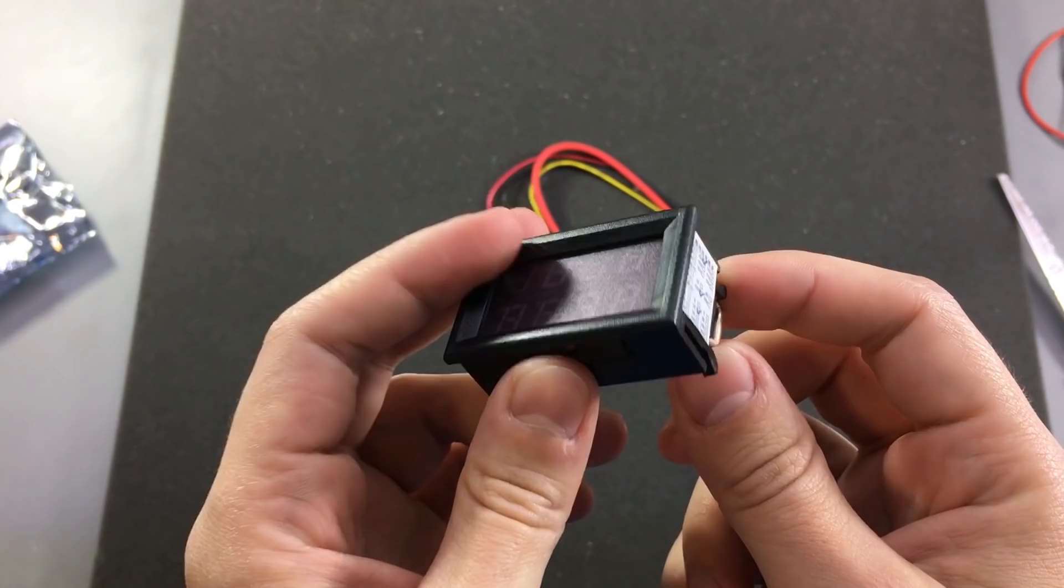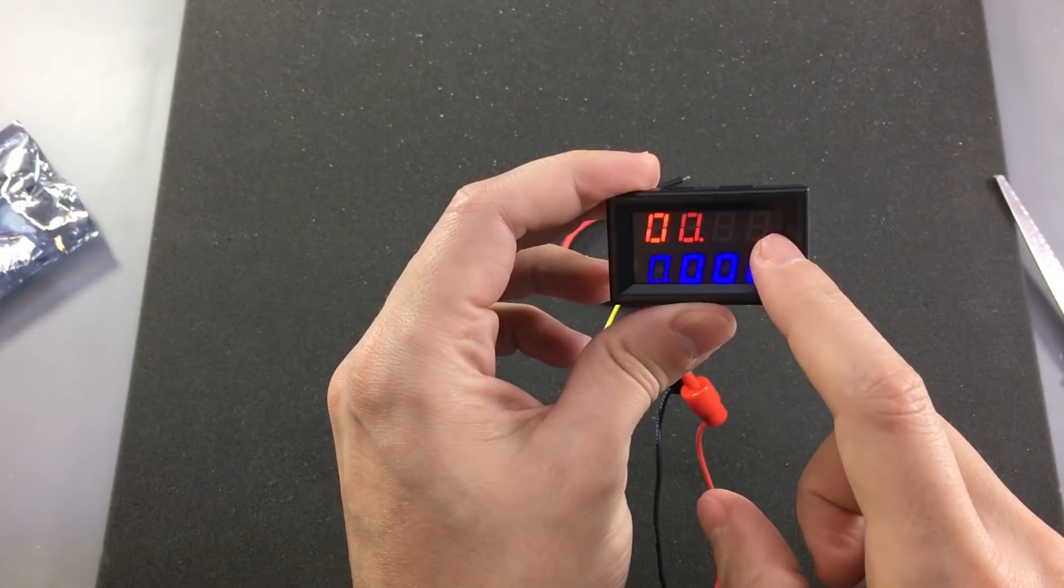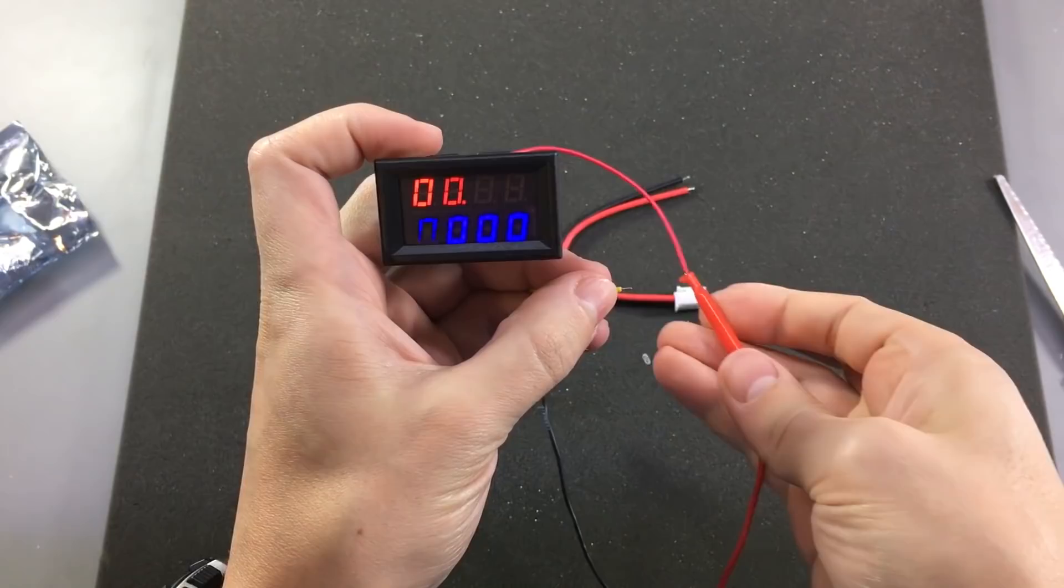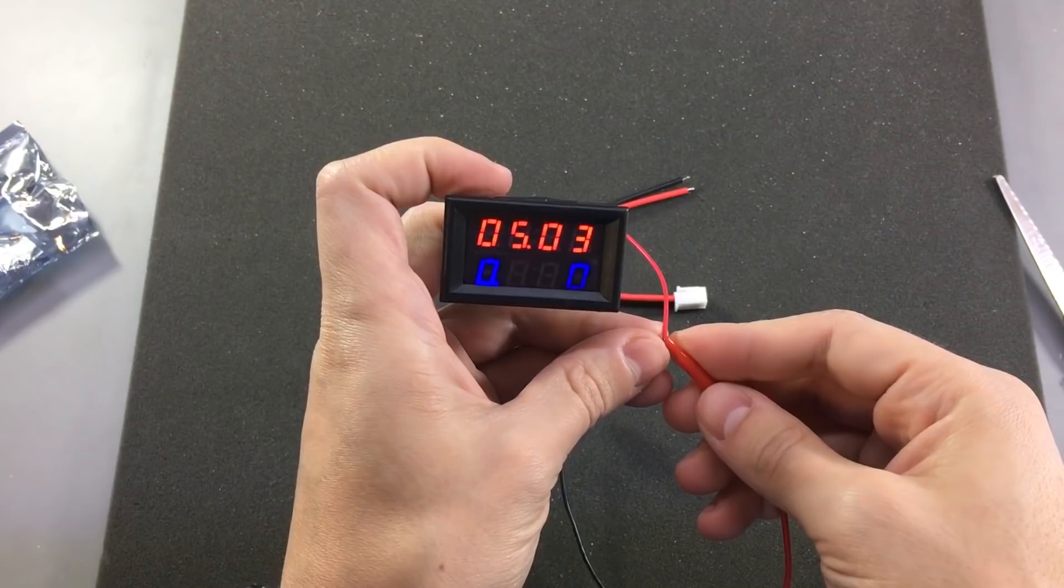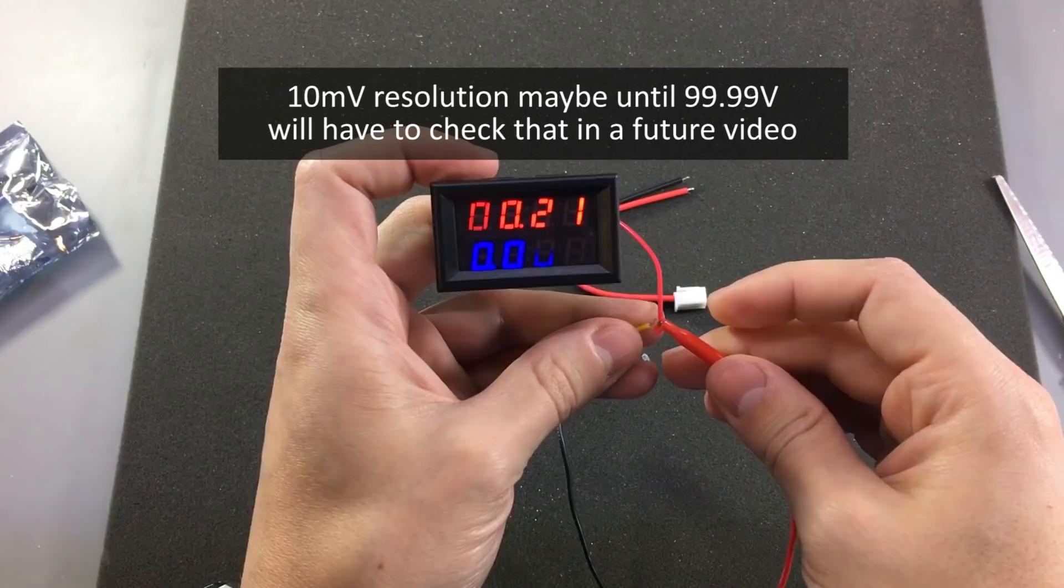So let's try to power this up and see what kind of resolution we're getting. Okay, so it works at 5 volts and it looks like we're getting a 10 mV resolution and 1 mA resolution. It certainly looks like, I mean I see the dot right here. And I can see on my camera that it shows this scanning of digits, but that's just due to the frame rate of the camera that's not visible in real life. So yeah, it looks like we're getting a 10 mV resolution, which is not bad.